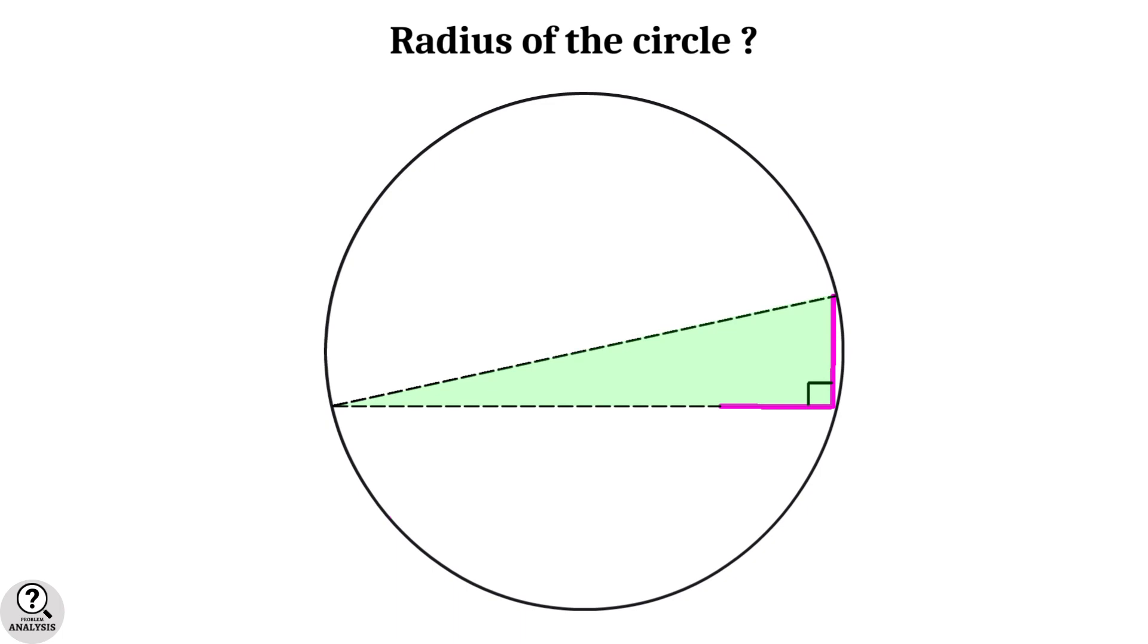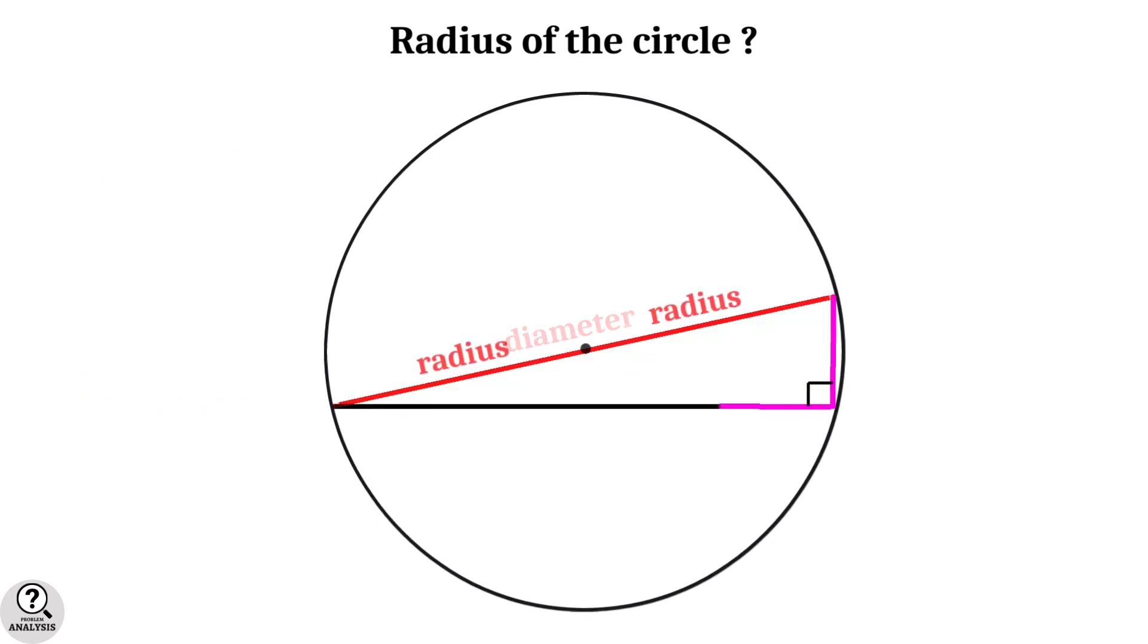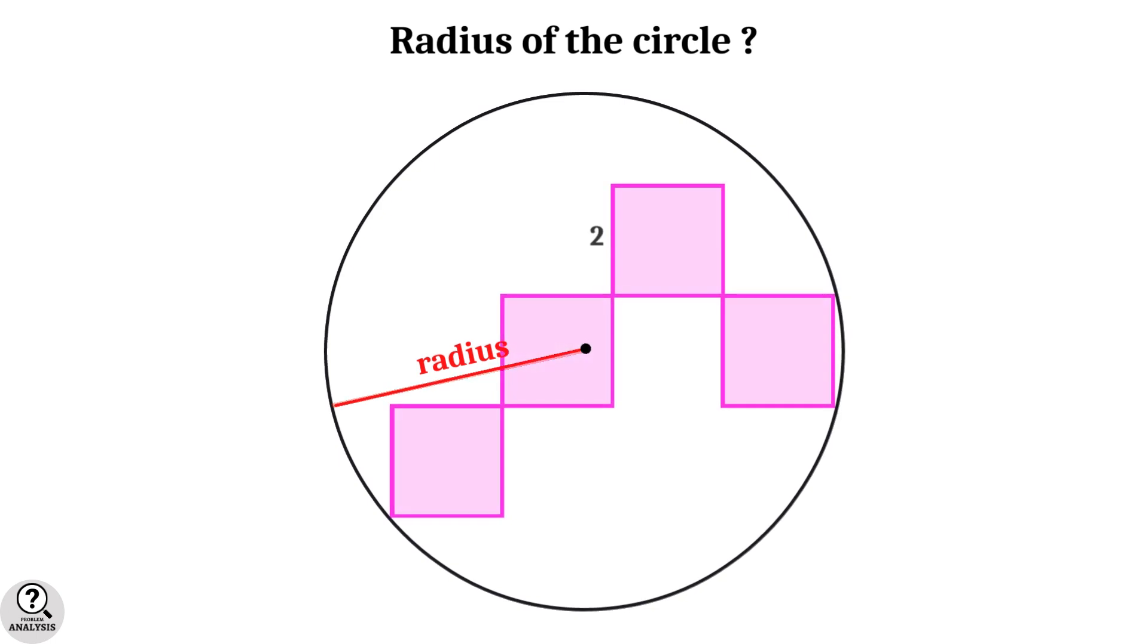Then, as we know, the radius is equal to half of the diameter, which is the required answer. So let's proceed in that way.